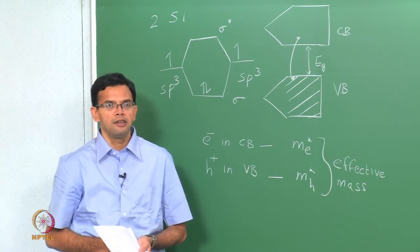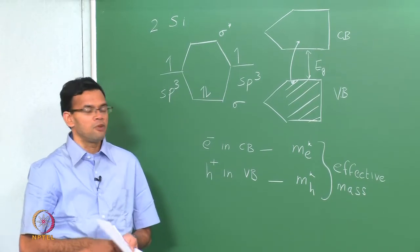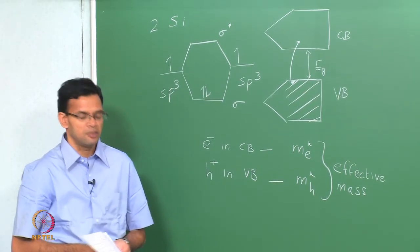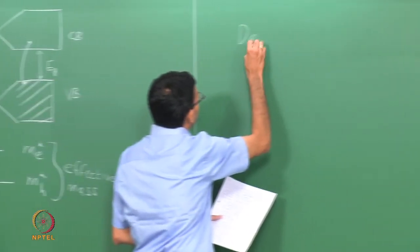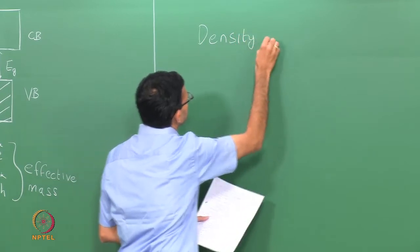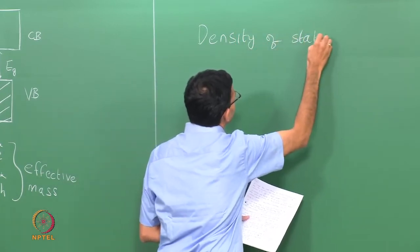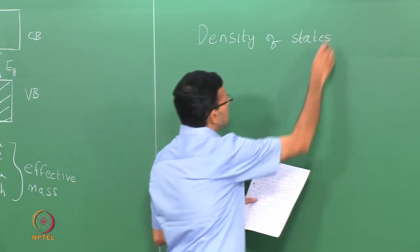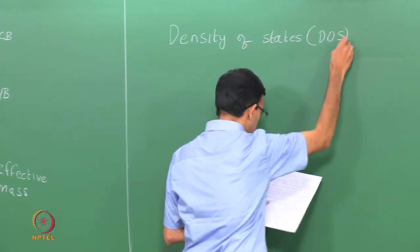But before we do that, today we are going to talk about some concepts that we will use for these calculations. The first thing we are going to talk about today is called density of states. I will write this as an abbreviation: DOS.